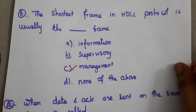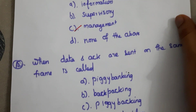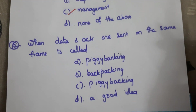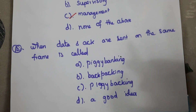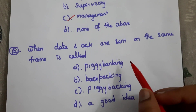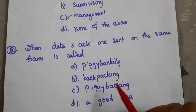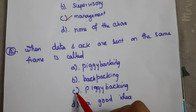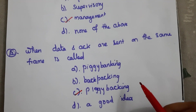Next question: when data and acknowledgement are sent in the same frame, what is it called? If you are sending data and acknowledgement in a single frame, it is known as piggybacking. The answer here is C — piggybacking.